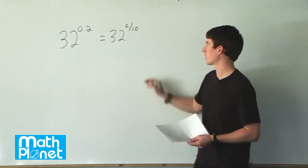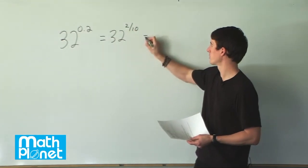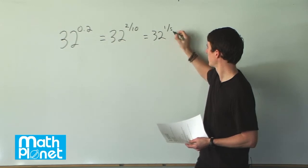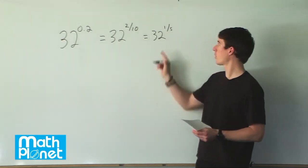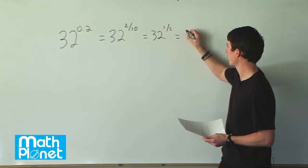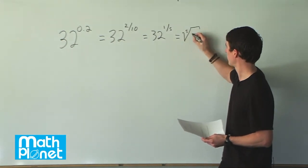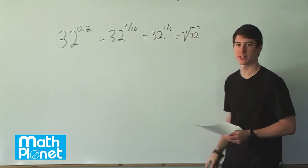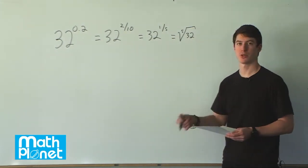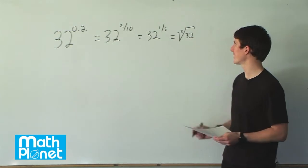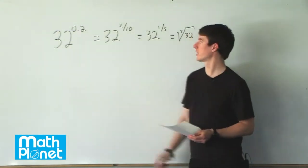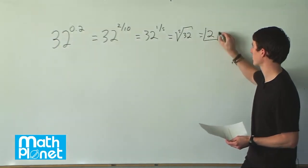Now it's getting a little better. We can already simplify this to 32 to the power of 1 fifth. This is helpful because 1 fifth is the same as the fifth root of 32. So what times itself 5 times gives us 32? Well, that's just 2 — 2 times 2 times 2 times 2 times 2 is 32. So this strange index here gives us a simple integer answer.